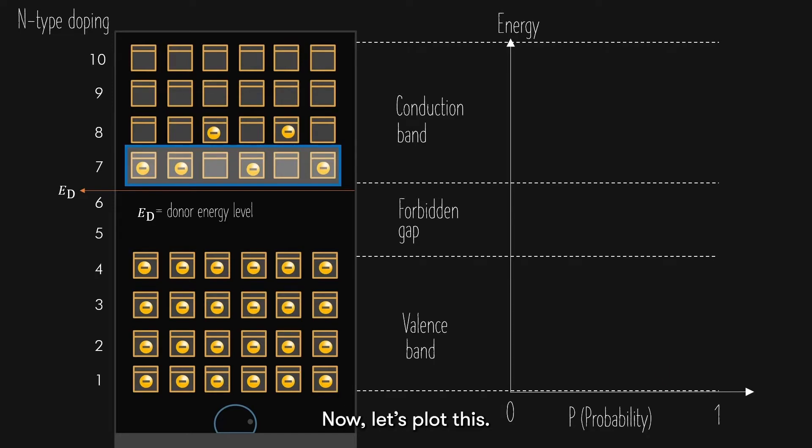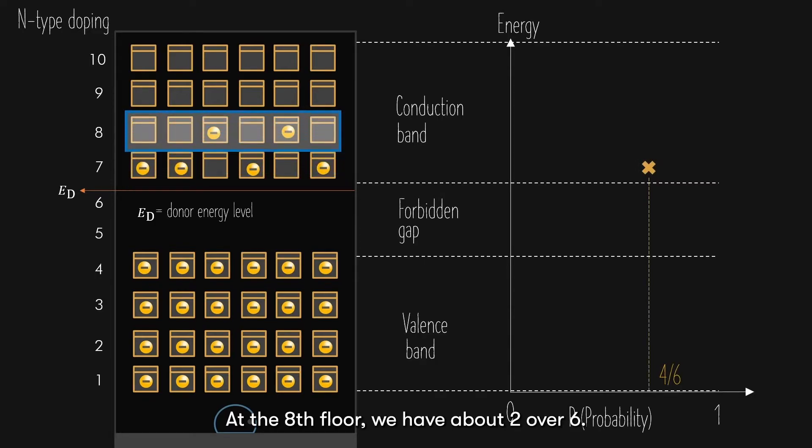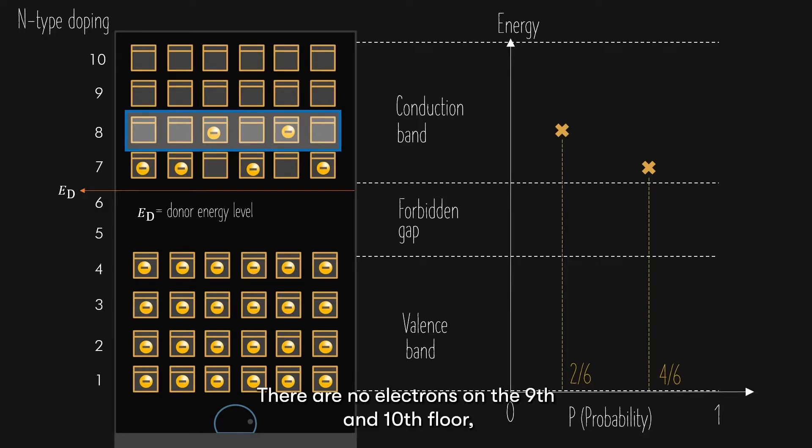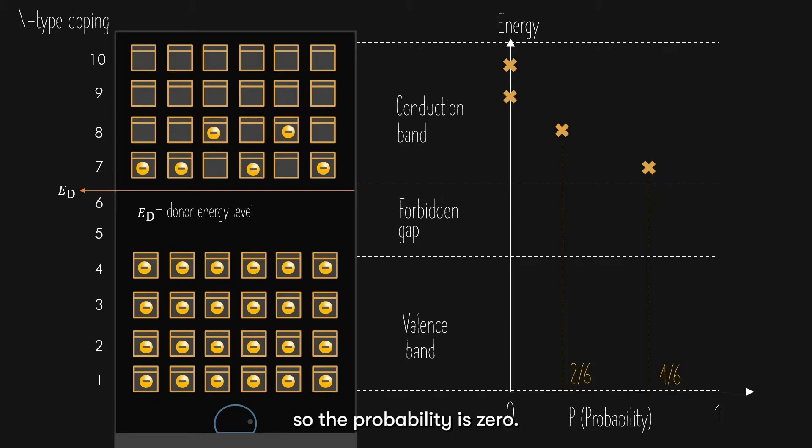Now, let's plot this. At the 8th floor, we have about 2 over 6. There are no electrons on the 9th and 10th floor, so the probability is 0. At the valence band, the probability of electrons is still 1.